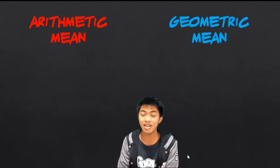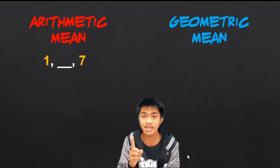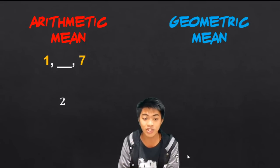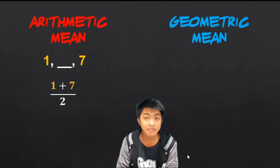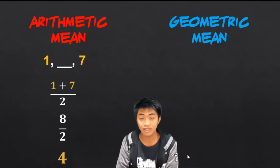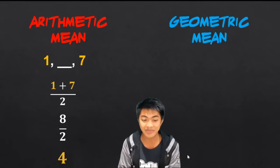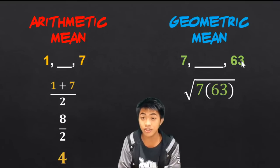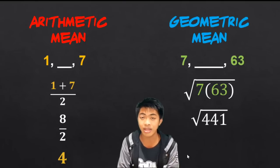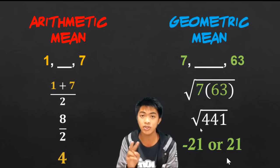We have arithmetic mean and geometric mean. For the arithmetic mean, this involves finding a missing term in between two given terms. If there is only one missing term, it's easy — we just take the average of the two given terms: 1 plus 7 divided by 2, so the missing term is 4. For the geometric mean with one missing term, we take the square root of the product of the two given terms: square root of 7 times 63 equals square root of 441, which gives negative 21 or positive 21. So there can be two possible answers.